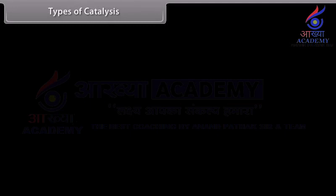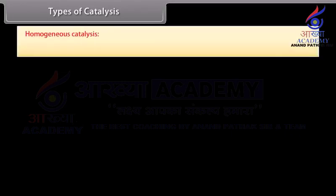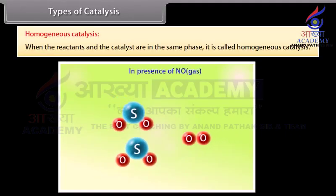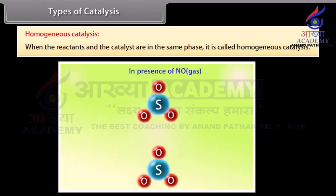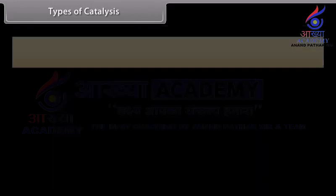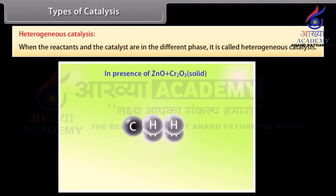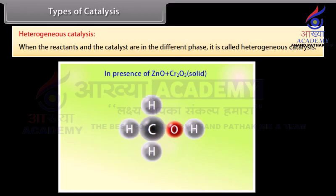Types of catalysis. Catalytic reactions are of two types: homogeneous catalysis and heterogeneous catalysis. Homogeneous catalysis: when the reactants and the catalyst are in the same phase, it is called homogeneous catalysis. For example, oxidation of sulfur dioxide into sulfur trioxide in the presence of nitric oxide in the lead chamber process for manufacture of sulfuric acid — reactants sulfur dioxide and oxygen, and the catalyst nitrous oxide, are all in the same gaseous phase. Heterogeneous catalysis: when the reactants and the catalyst are in different phases, it is called heterogeneous catalysis. For example, manufacture of methanol from carbon monoxide and hydrogen using ZnO plus Cr2O3 as catalyst — reactants are in gaseous phase and catalyst is in solid phase.